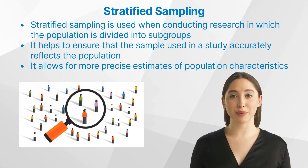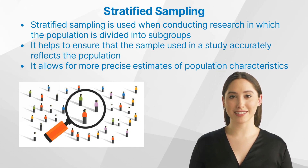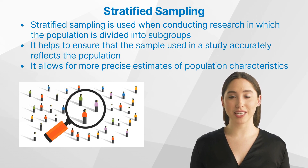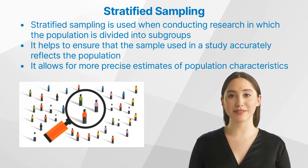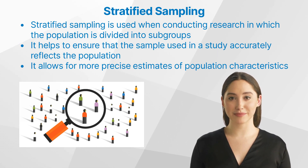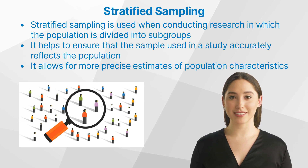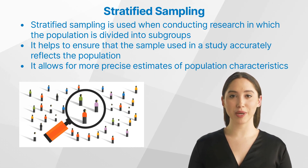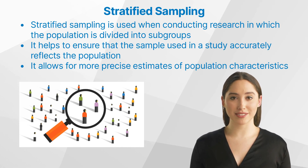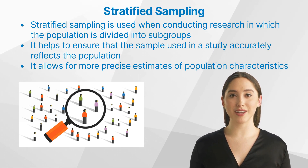Stratified sampling is a type of sampling technique used when conducting research in which the population is divided into subgroups, or strata, and then a sample is selected from each stratum. Stratified sampling helps to ensure that the sample used in a study accurately reflects the population being studied, reducing bias and increasing the accuracy of the results.